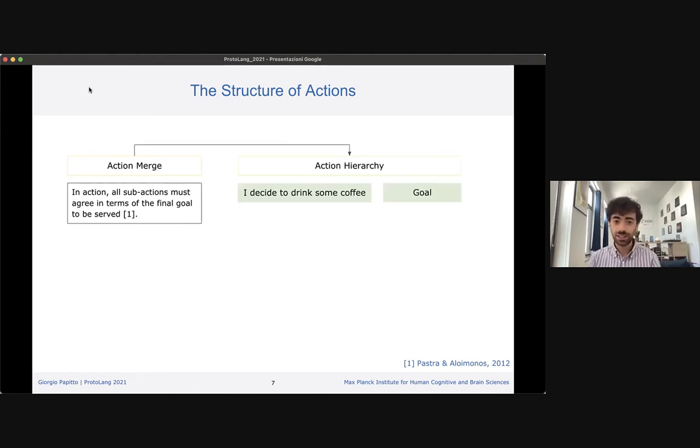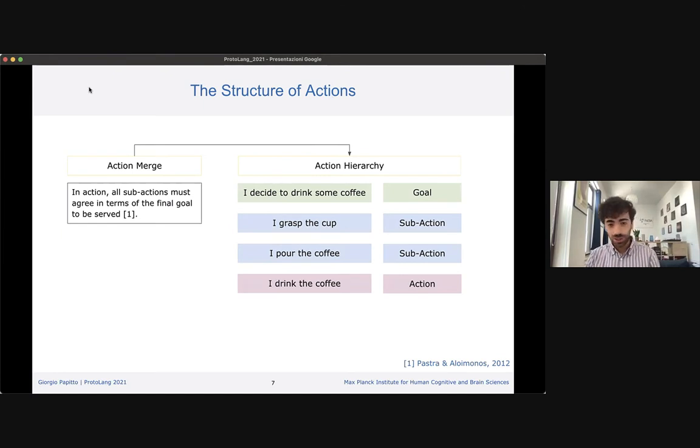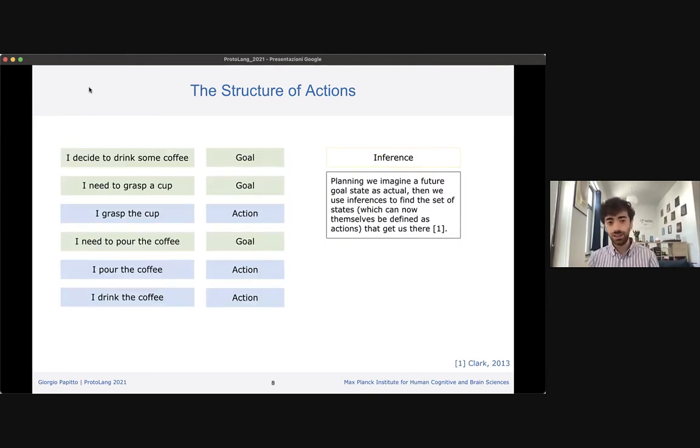If we take as an example my will to drink some coffee, I need to postulate sub-actions which lead me to my goal: grasp the cup, pour the coffee, and drink the coffee. But one useful question is whether this is really one single action fulfilling one single goal. Here I make the link to Clark, who made really nice work on definitions of actions. He mentioned that planning an action, we also postulate additional states which have rights to be defined as actions since they have their own goals.